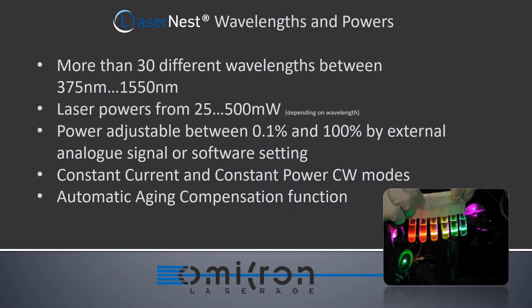With a choice of more than 30 different wavelengths between 375 and 1550 nanometers and laser powers between 25 and 500 milliwatts, the LaserNest can cover a wide range of applications. Power can be adjusted by external analog modulation signal or software setting, ranging from 0.1% up to 100%. In continuous wave mode, the laser can be operated in constant current or constant power mode.